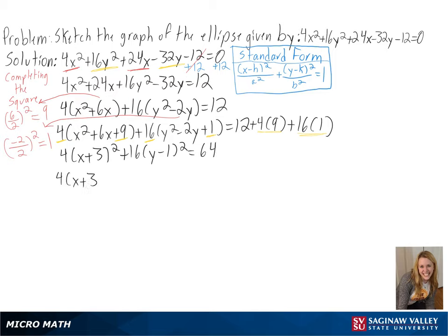To get our equation equal to 1, we will divide both sides by 64. We can split our fractions up, and then we can simplify 4 over 64, since this is also equal to 1 over 16.